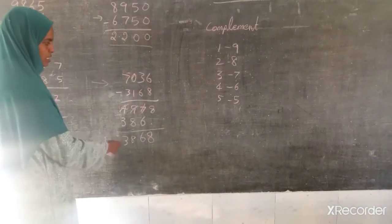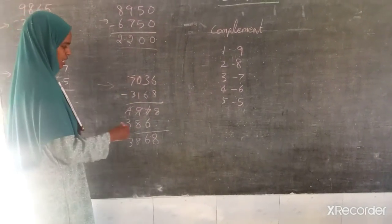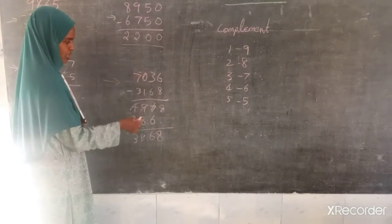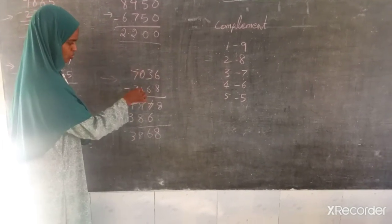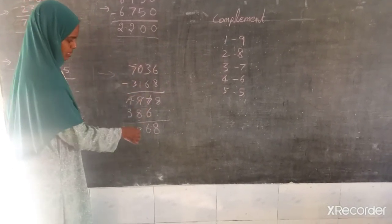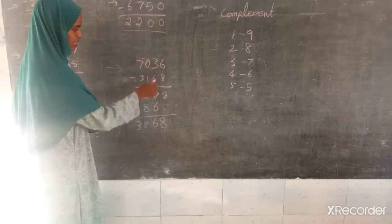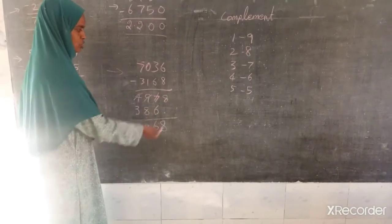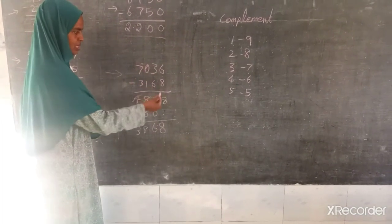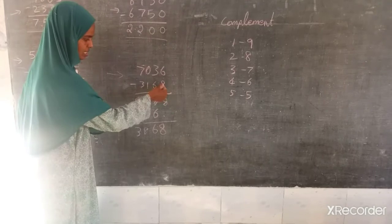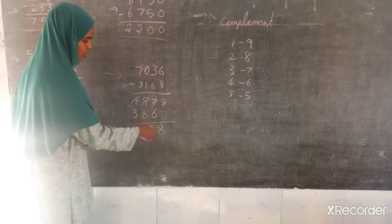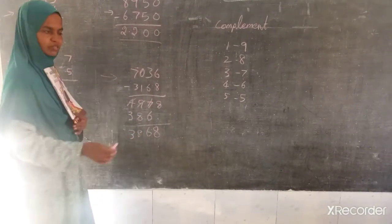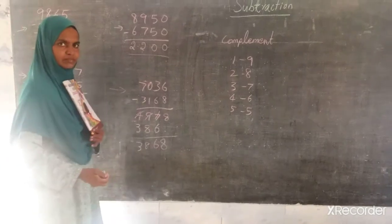To check your answer, you can just add them. 3 plus 3 is 6, then 1 more. 1 plus 8 is 9, then 1 more carry. 6 plus 6 is 12, then with carry, and 8 plus 8 is 16 — so the carry cascades up and your answer will be right.